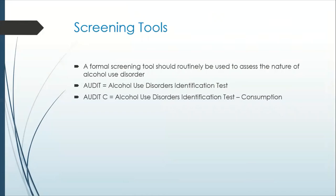A formal screening tool should routinely be used to assess the nature of the alcohol use disorder. AUDIT and AUDIT-C are two screening tools recommended by the NHS, and though other screening tools exist, these are the most commonly used. AUDIT stands for Alcohol Use Disorders Identification Test and it's a 10-question screening tool. AUDIT-C is an abbreviated version that starts with three questions, and if a certain score is reached indicating possible problem drinking, it advises completing the seven other questions to complete the whole AUDIT screening tool.